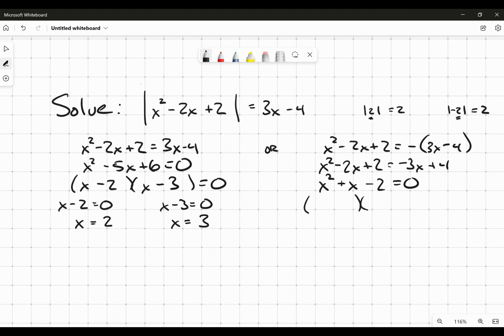Now I'm hoping this factors nicely, and I believe it does: (x plus 2)(x minus 1). Just like the other side, I've got two linear factors. If either goes to zero, the whole thing goes to zero. So x could be negative 2 or 1.